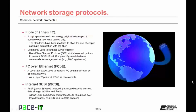Now let's move on to the protocols. We're going to start with fiber channel — a high-speed network technology originally developed to operate over fiber-optic cables only, though standards have been modified to allow copper cabling as well. It's commonly used to connect storage area networks together. Fiber channel uses fiber channel protocol, or FCP, as its transport layer protocol to transmit SCSI — Small Computer System Interface — commands to storage devices.